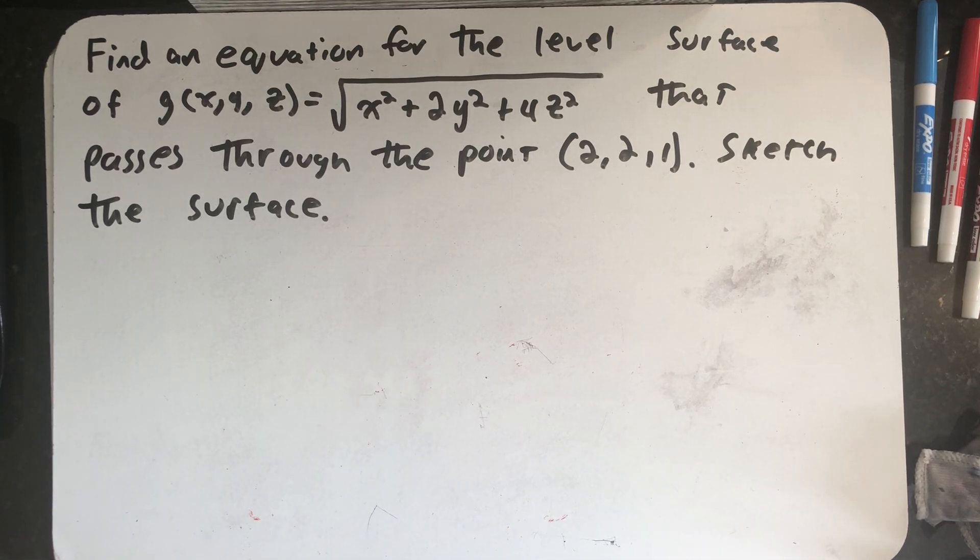Find an equation for the level surface of g(x, y, z) equals the square root of x squared plus 2y squared plus 4z squared that passes through the point (2, 2, 1). Then we're supposed to sketch the surface.